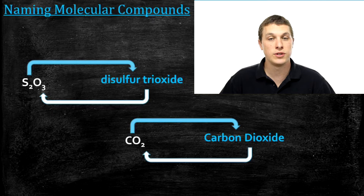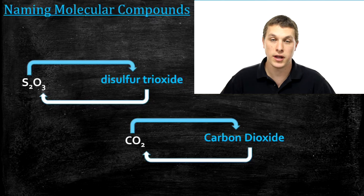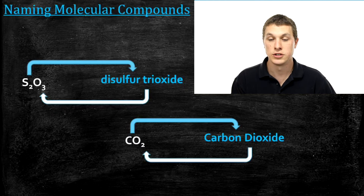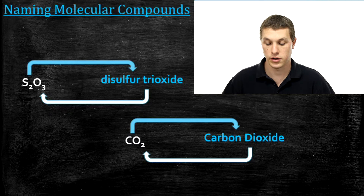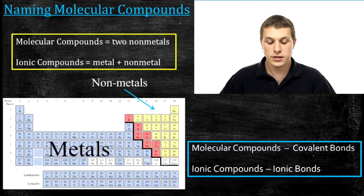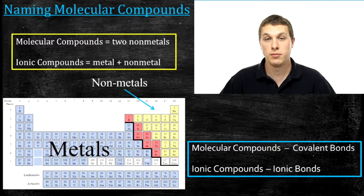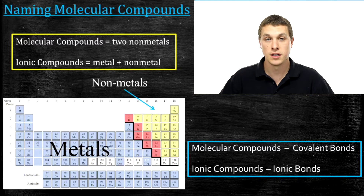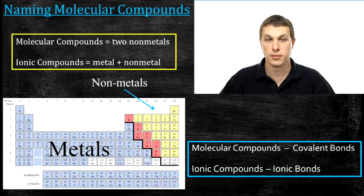The first thing we're going to do is talk about how you can identify a molecular compound and compare it to an ionic compound. A molecular compound is a mixture of two nonmetals. If you look at the periodic table, everything in blue is a metal and everything in yellow is a nonmetal. When you mix a metal and a nonmetal, you get an ionic compound. When you mix two nonmetals, you get a molecular compound.